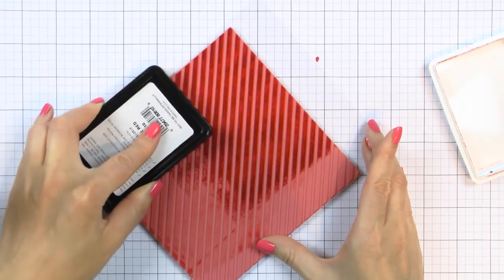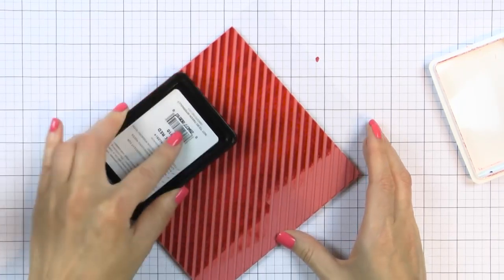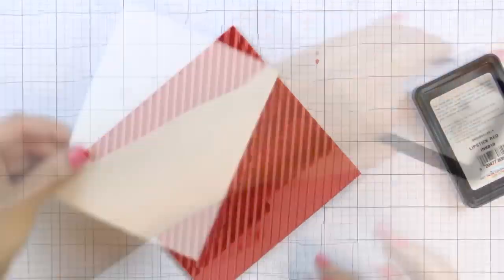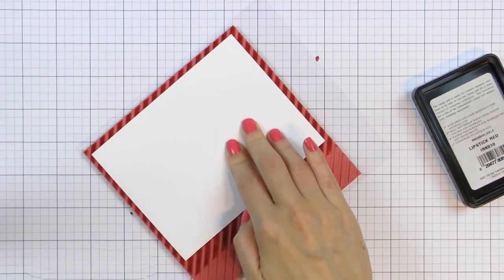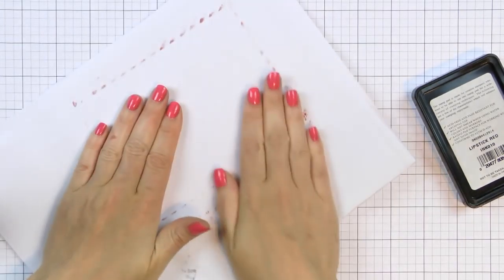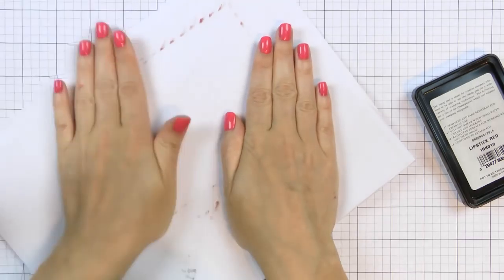I'm going for a traditional Christmas airmail stripe look, so I'm going to use the diagonal stripe background cling stamp from Simon and stamp it onto 4.25 by 5.5 inch white cardstock panels.